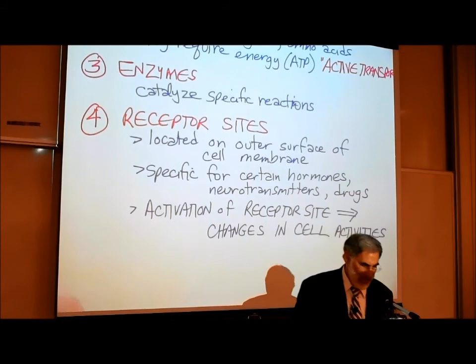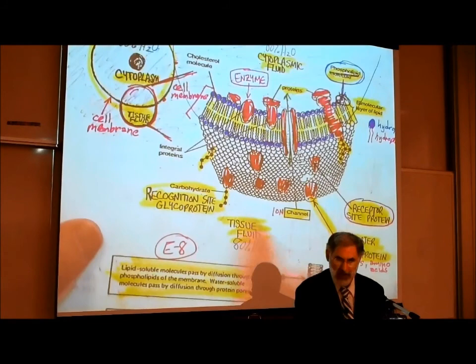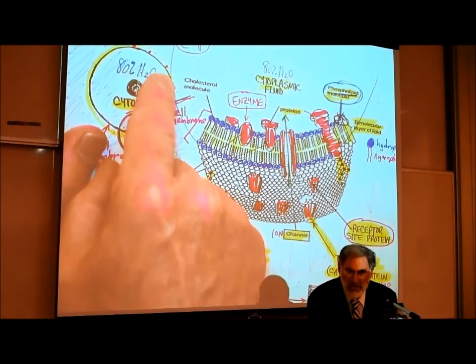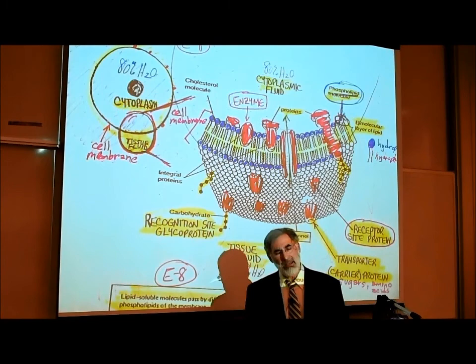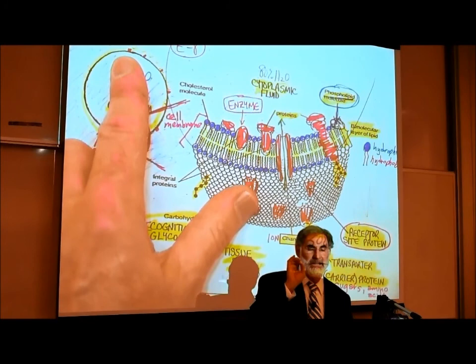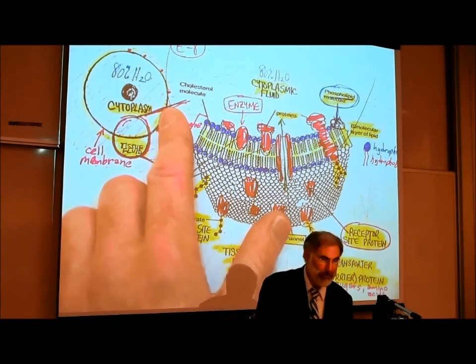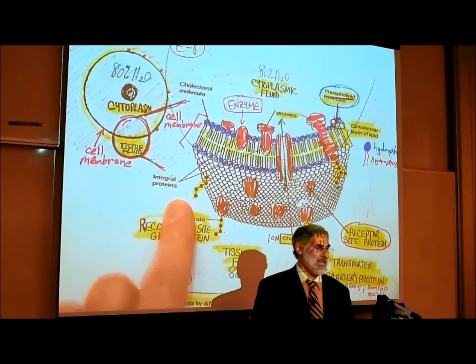Looking at this picture, if there are receptor site proteins on the outer surface of the cell, this is where different hormones attach. These receptor site proteins are specific: some are insulin receptor sites, some are estrogen receptor sites, some are growth hormone receptor sites, some are oxytocin receptor sites, and some are corticosteroid receptor sites. Not every cell in our body has receptor sites for every hormone.